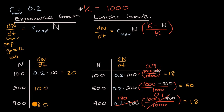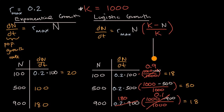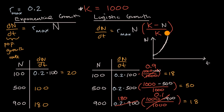In exponential growth, the population rate keeps growing because the more individuals you have, the more there are to reproduce, and they just keep growing exponentially. But in logistic growth, they're getting closer and closer to the carrying capacity. At 900, some bunnies are going hungry, not reproducing as much, or dying of starvation or dehydration. Visually, exponential growth looks like a curve that keeps rising forever — the more the population is, the faster it grows, with no limit in theory.